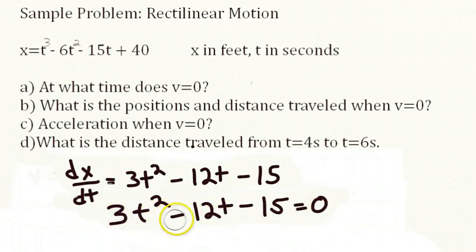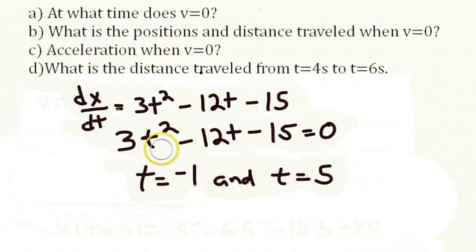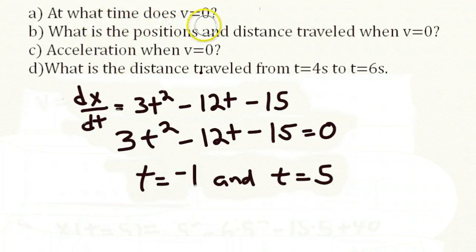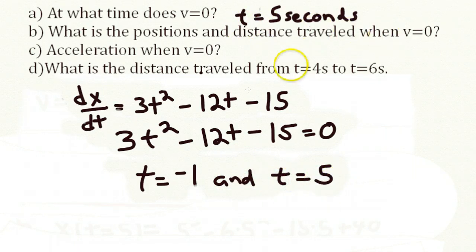The velocity equals zero when 3t squared minus 12t minus 15 equals zero. Solving for t, we get two roots: t equals minus one second and t equals five seconds. Since we start at t equals zero, the velocity equals zero at t equals five seconds.